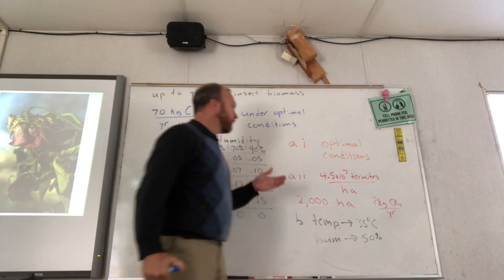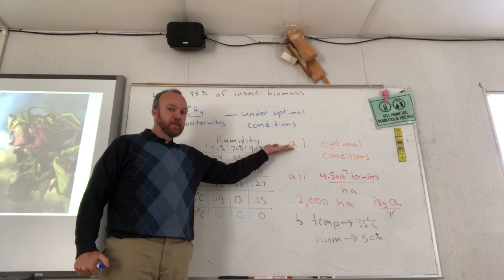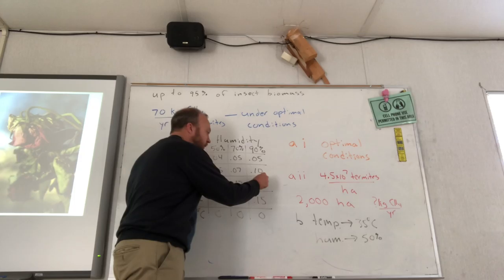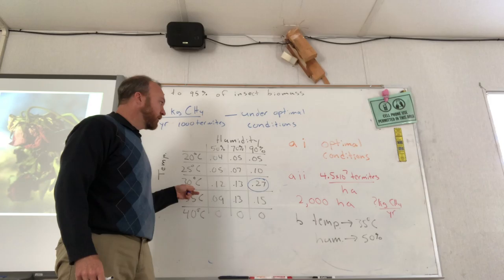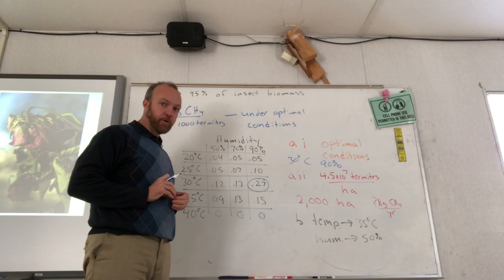So the first question that it asks you is what were the optimal conditions? So if you understand what optimal conditions means, this really shouldn't be a difficult question. We just want to know when the termites eat the most wood, when they consume wood at the fastest rate. So if we look at the table, we're looking for the fastest rate, we're looking for the biggest number, that's 0.27. So here is the fastest rate. So what are those optimal conditions? 30 degrees Celsius and 90% humidity. So that's all I was really looking for on the first part.